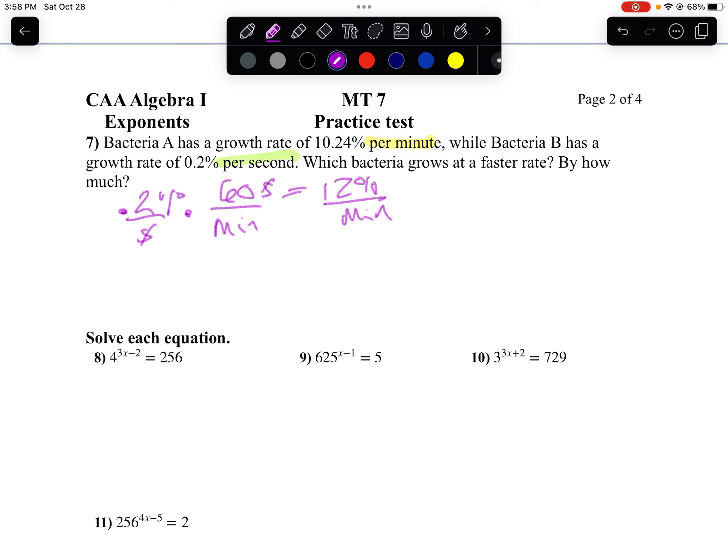So bacteria B is growing faster. How much faster? Well, we're going to take 12 minus 10.24. Okay, well then if I subtract those, I will get 0.66. 10 minus 4 is 6. 9 minus 2 is 7. So it was wrong there. It's 7.6. 11 minus 10 is 1, and 11 minus 10 is 1. So I'll get 1.76% per minute is how much faster it's growing.